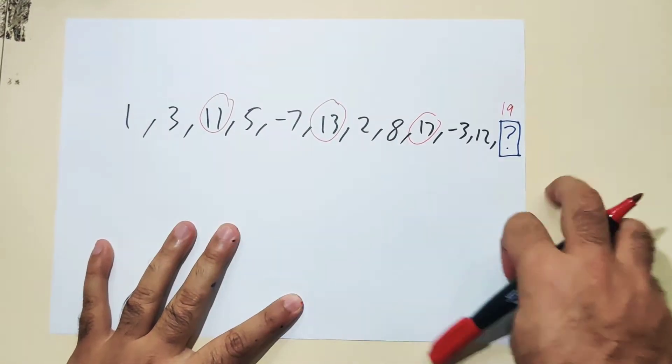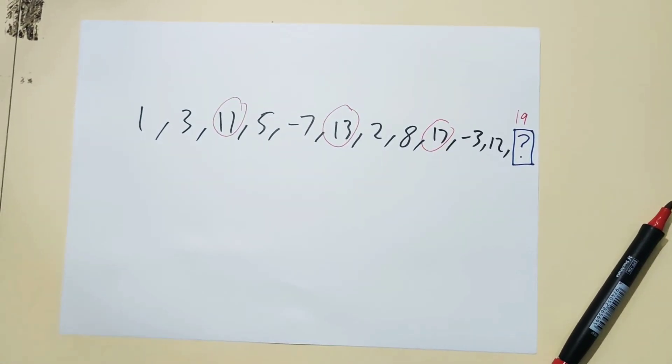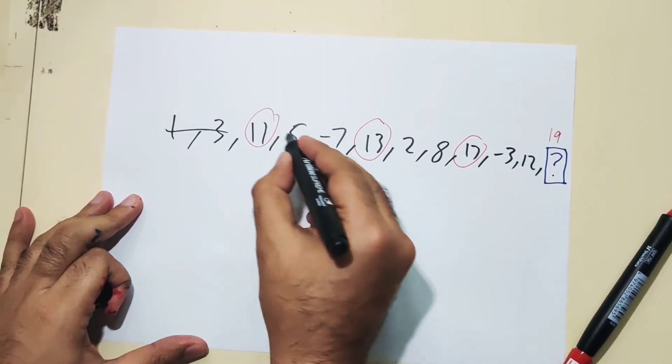Sir, so, 1, 3, 5, 7, 2, 8, 3, negative 3, 12, eh? They are dummies.